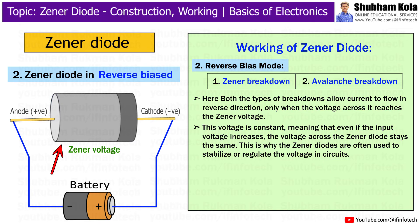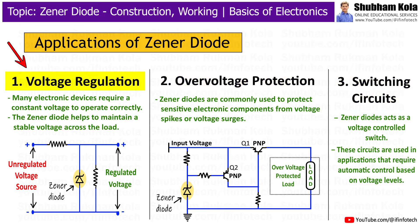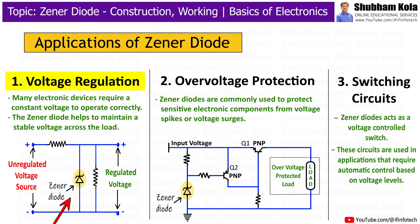Now that we understand how the Zener diode works, let's explore some of its applications in real life. First is voltage regulation. Many electronic devices require a constant voltage to operate correctly. The Zener diode helps to maintain a stable voltage across the load. In a voltage regulation circuit, a Zener diode is connected in reverse bias across the load with a resistor in series to limit the current.